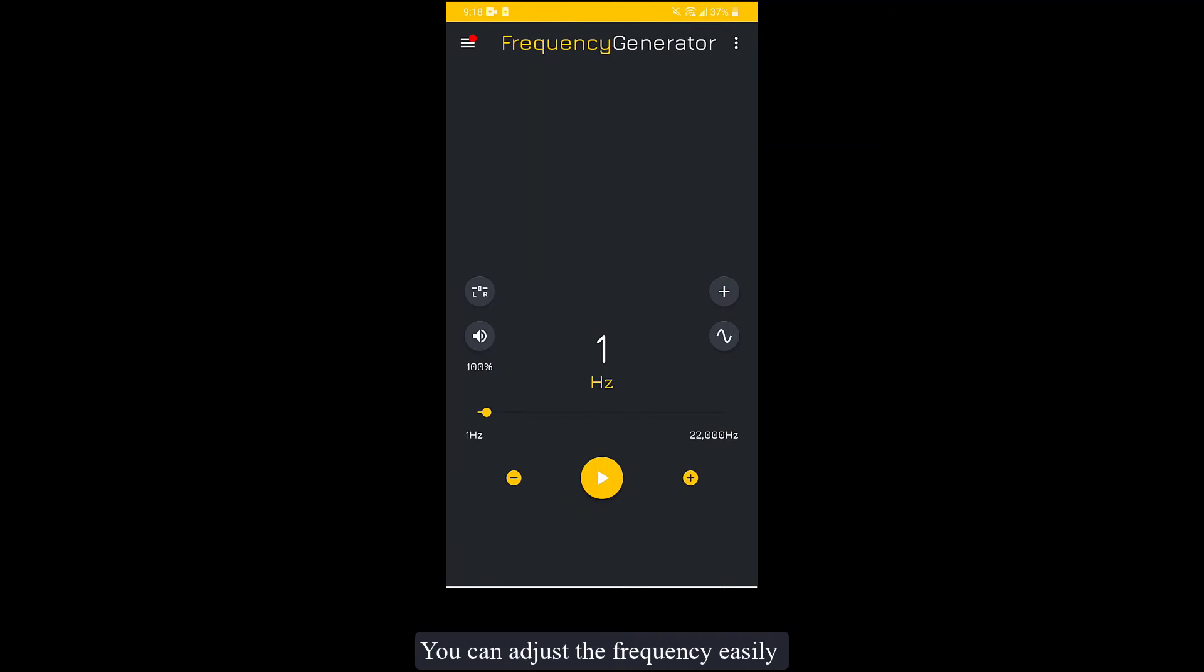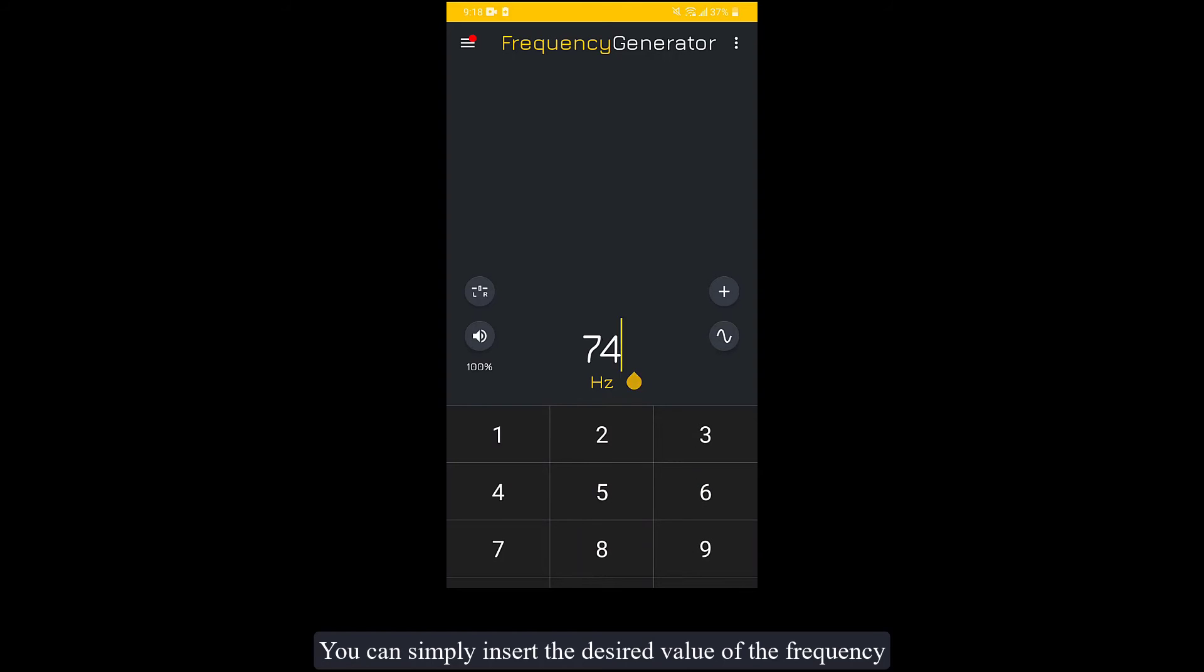You can adjust the frequency easily by dragging the yellow dot or you can simply insert the desired value of the frequency.